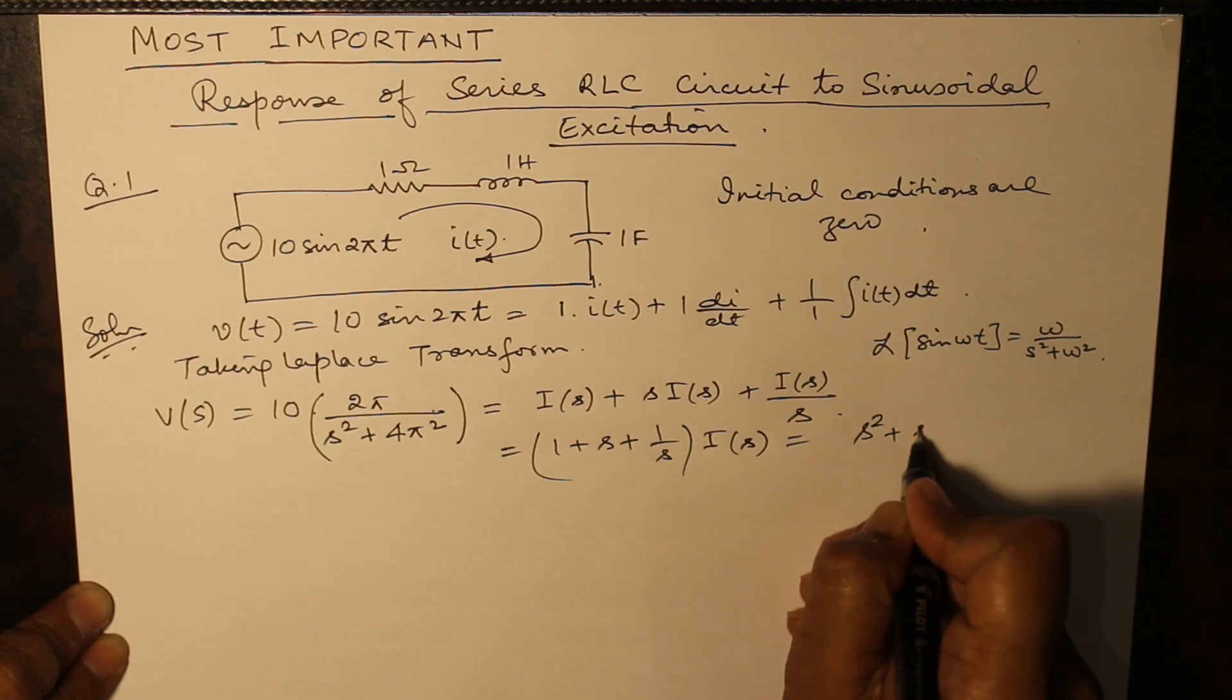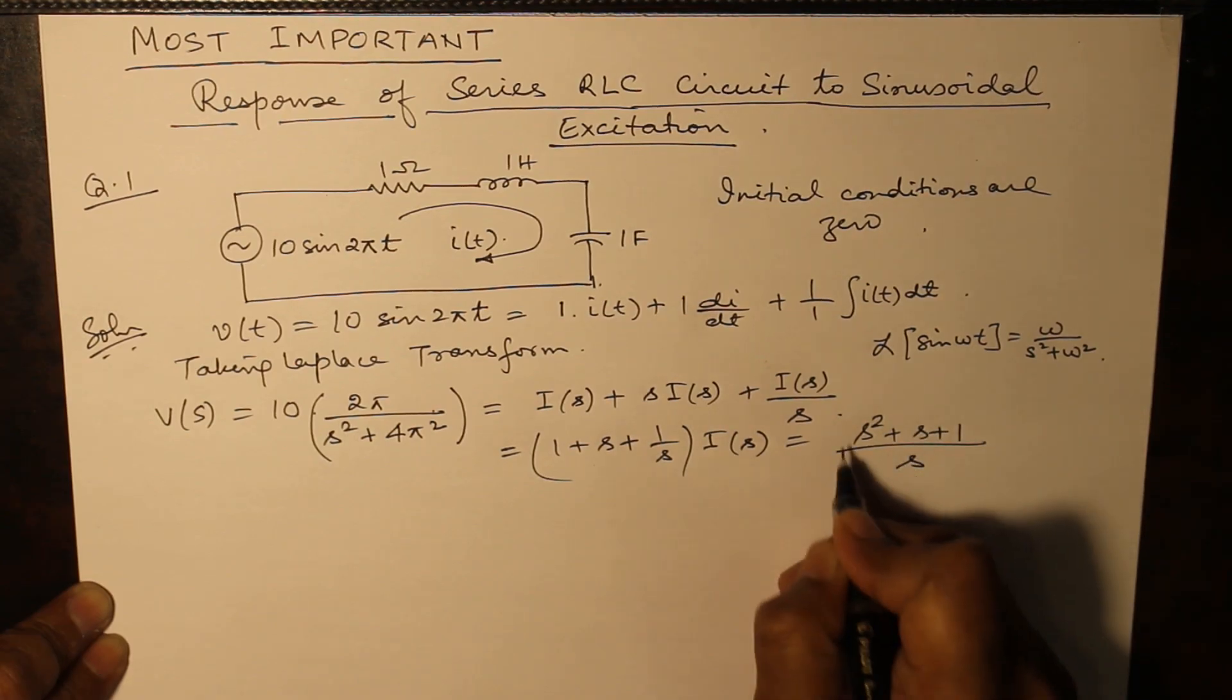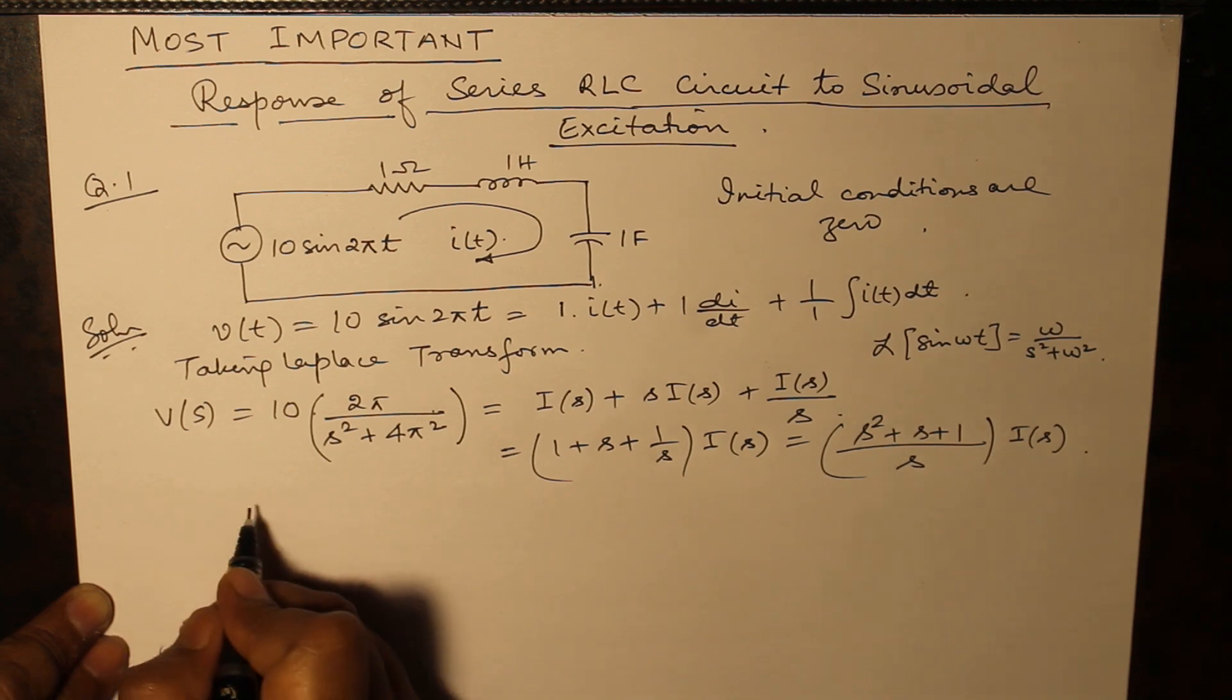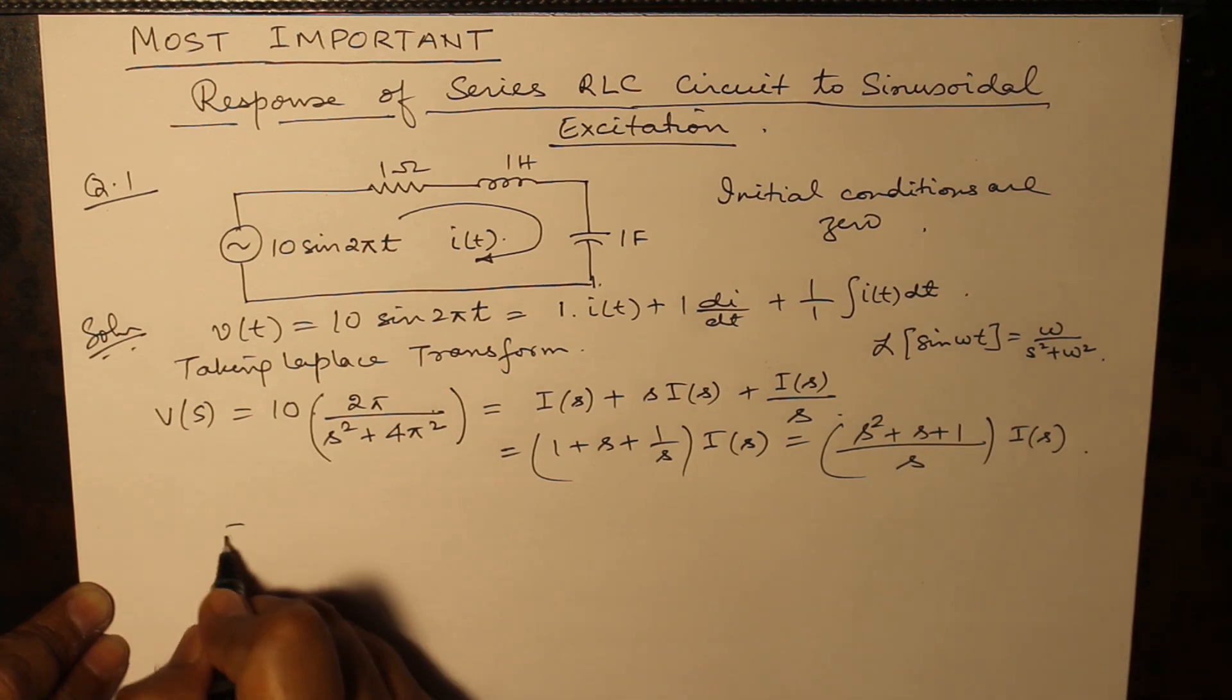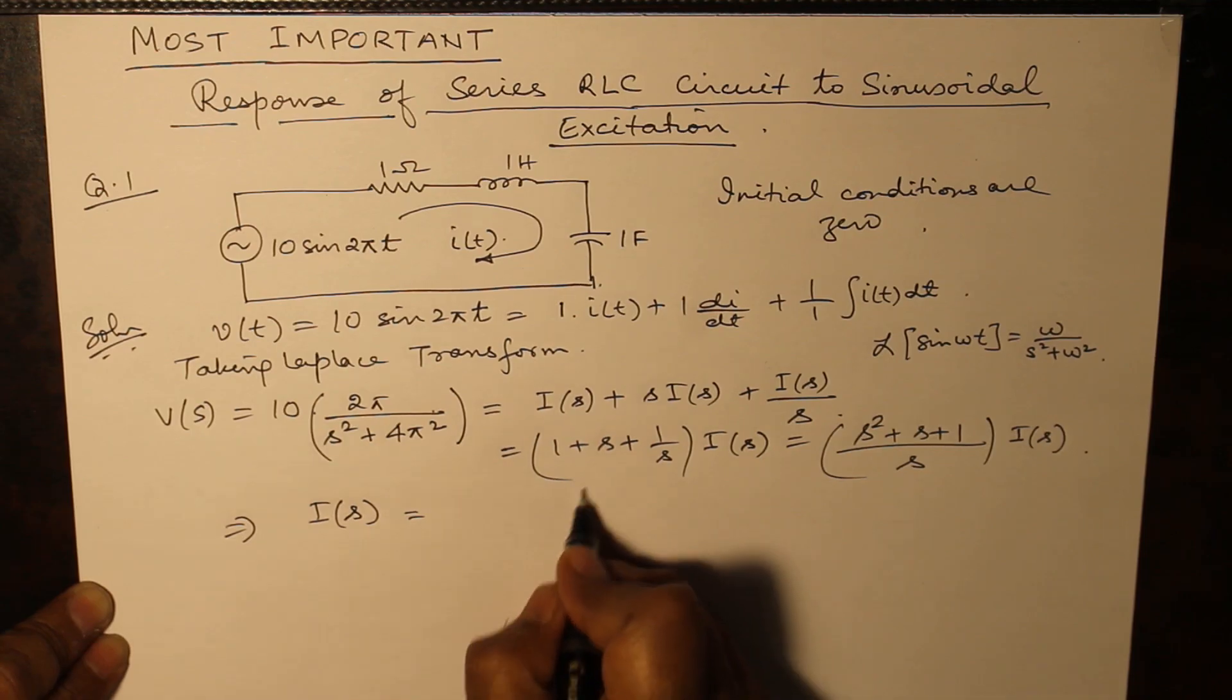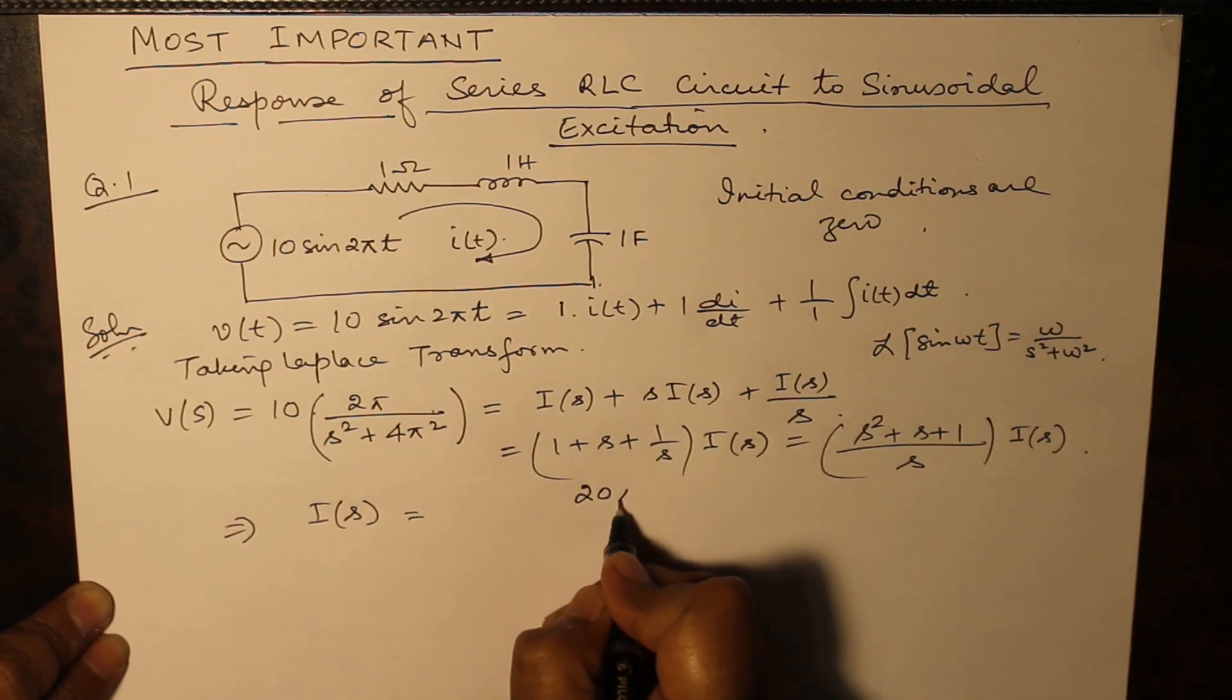s² plus s plus 1 over s times I(s). So I(s) can be written as 20π times s divided by...